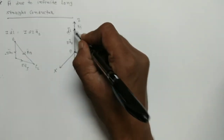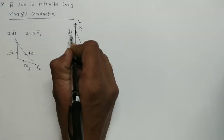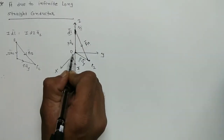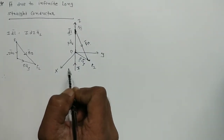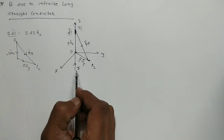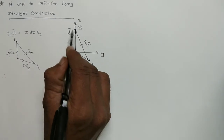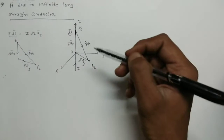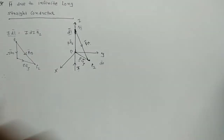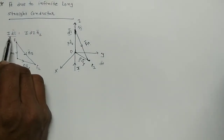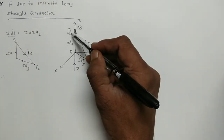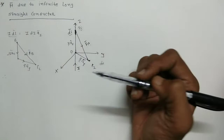First of all, I am considering a small differential length element dL̄ on the Z-axis at point P1, which is at distance Z from the origin. The differential current element is IDL̄. When current I is flowing through dL̄, the small differential current element IDL̄ equals IDZ·ÂZ, because this differential current element is on the Z-axis.